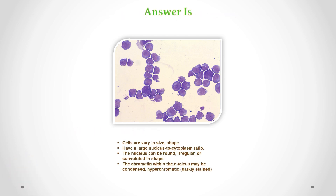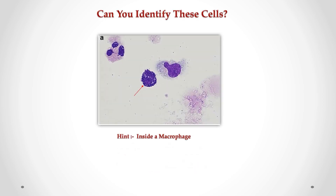Correct answer is lymphoma cells. We can see cells that vary in size and shape and have a large nucleus-to-cytoplasm ratio. The nucleus can be round, irregular, or convoluted in shape. The chromatin within the nucleus may be condensed and hyperchromatic — darkly stained. Can you identify these cells in CSF?